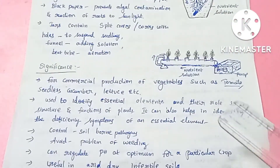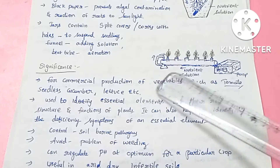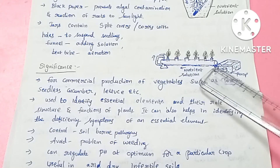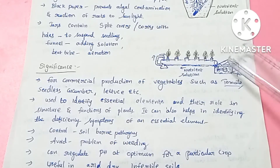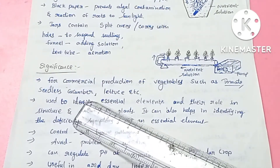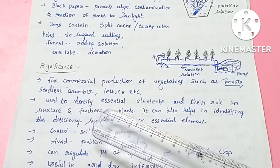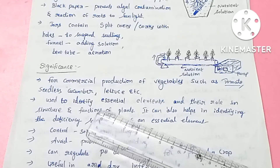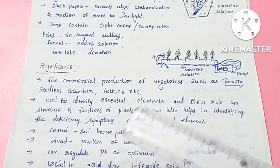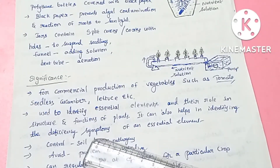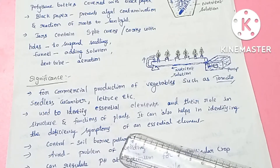The significance of this hydroponics culture is that it is supplied with water, including wastewater through a pump. The hydroponics method is used commercially on a large scale to grow vegetables such as tomatoes, lettuce, and seedless cucumbers. It is also used to study different mineral elements and their roles in plants.